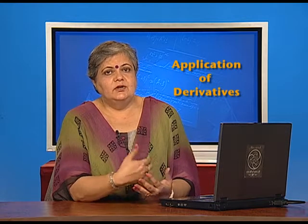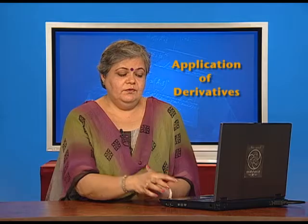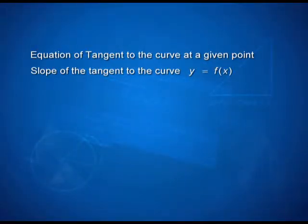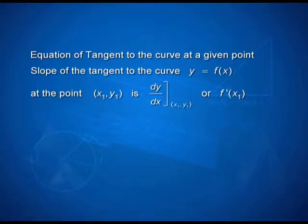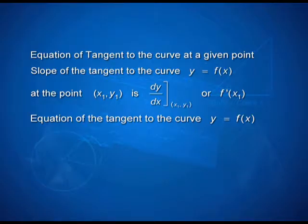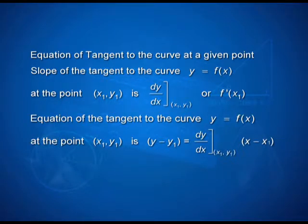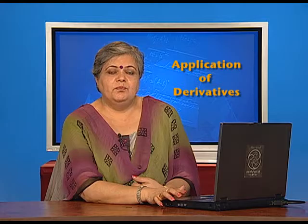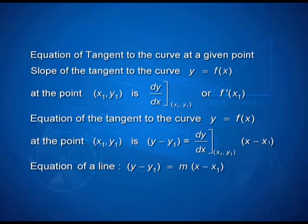Once this is understood, what we need to figure out is how to find the equation of the tangent to the curve at a given point. The slope of the tangent to the curve at the point (x₁, y₁) is the value of the derivative at that point — represented as dy/dx at (x₁, y₁), or f′(x₁). So the equation of the tangent to the curve y = f(x) at the point (x₁, y₁) is: y − y₁ = (dy/dx at x₁, y₁) × (x − x₁), coming from the simple slope-point form of a straight line: y − y₁ = m(x − x₁).